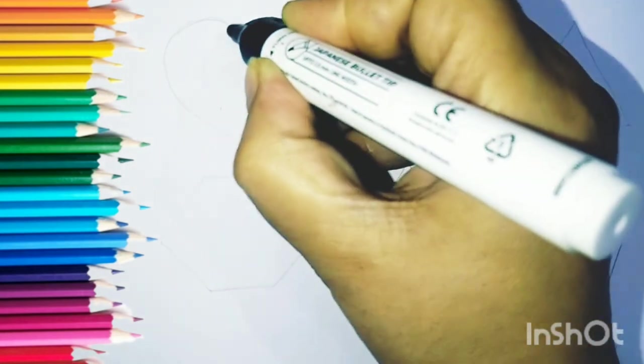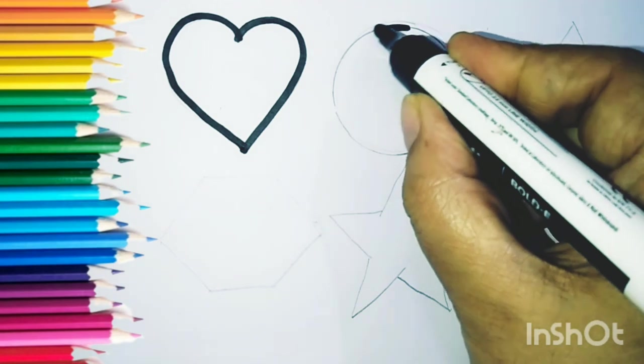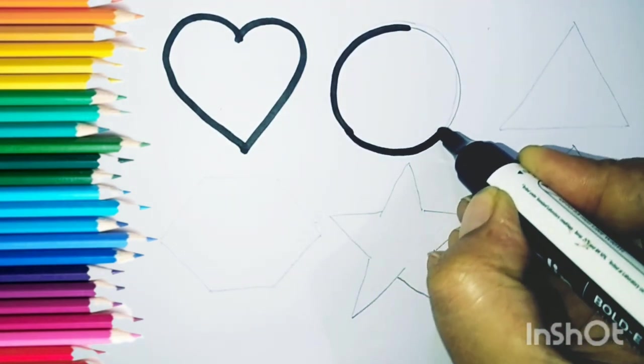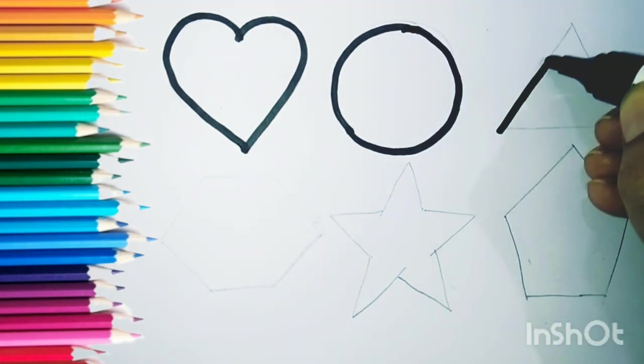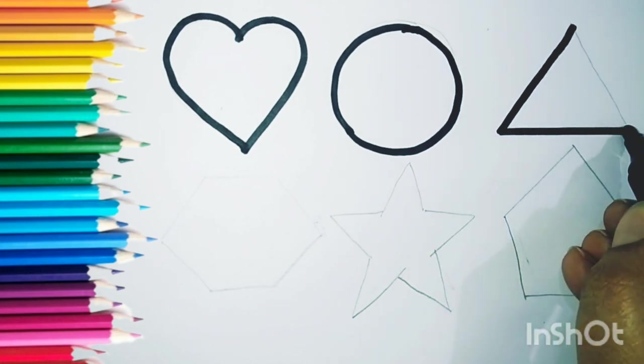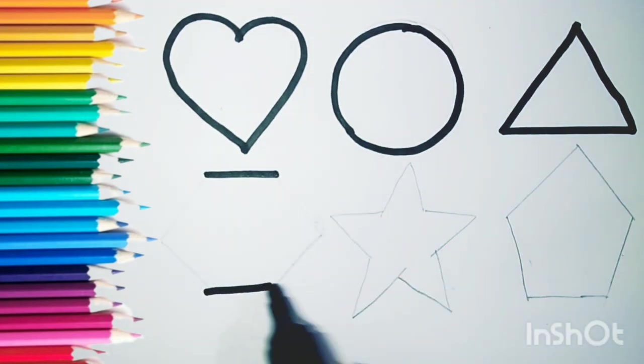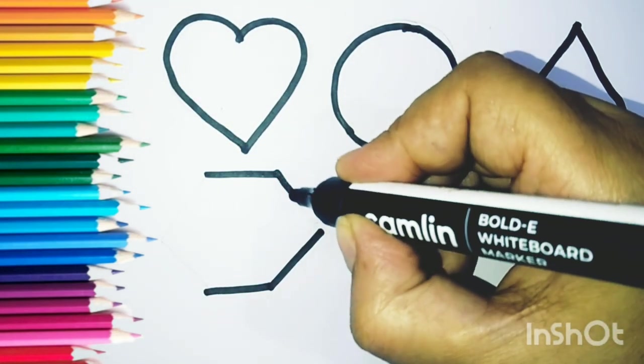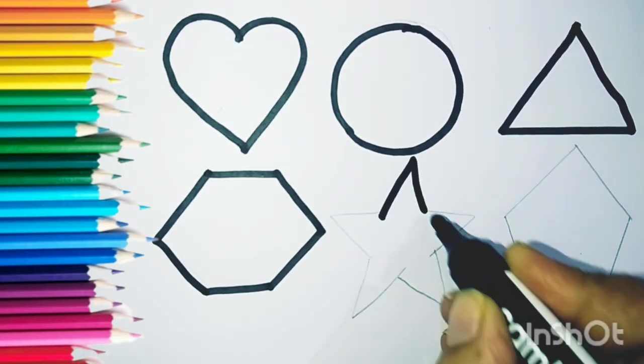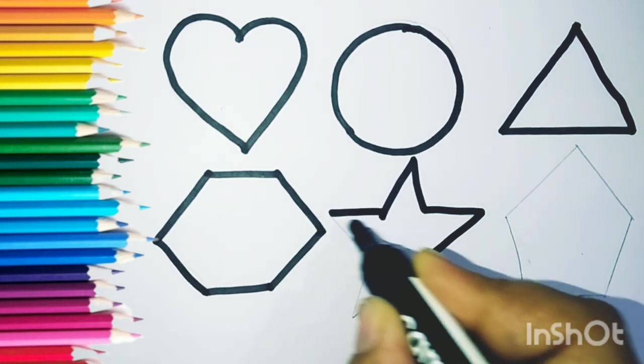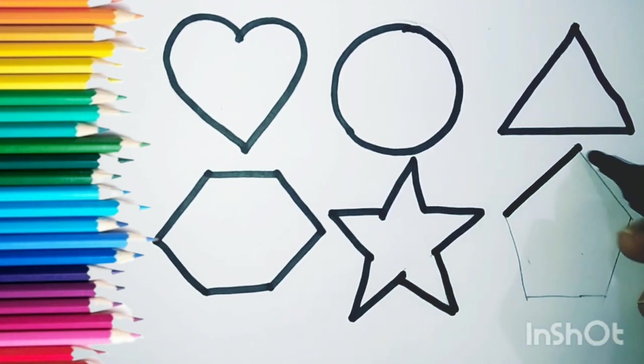It is very sweet heart shape. This is circle, we draw a circle shape. Triangle, this is triangle shape. Hexagon shape, hexagon. Star shape, star shape. This is pentagon shape, pentagon shape.